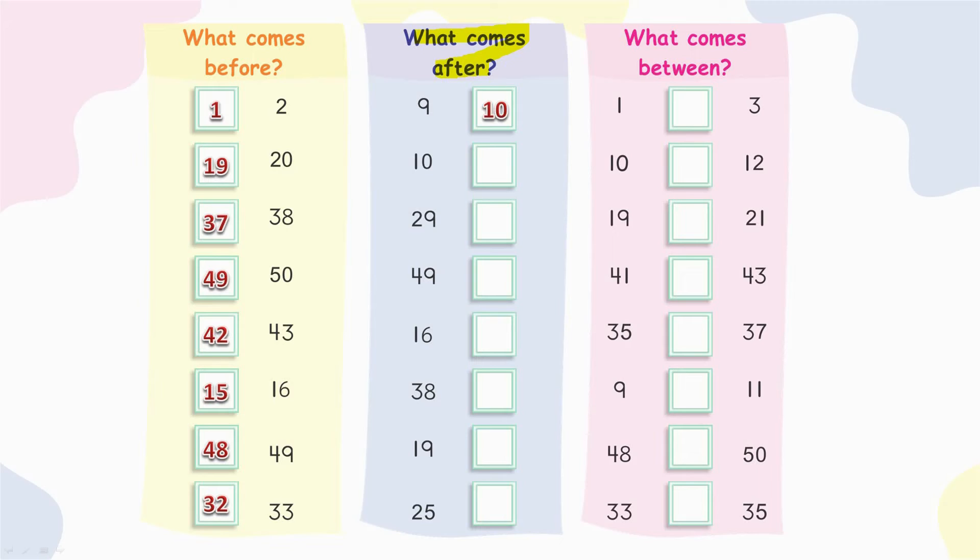What comes after ten? Eleven. What comes after twenty-nine? Thirty. What comes after forty-nine? Fifty. What comes after sixteen? Seventeen.